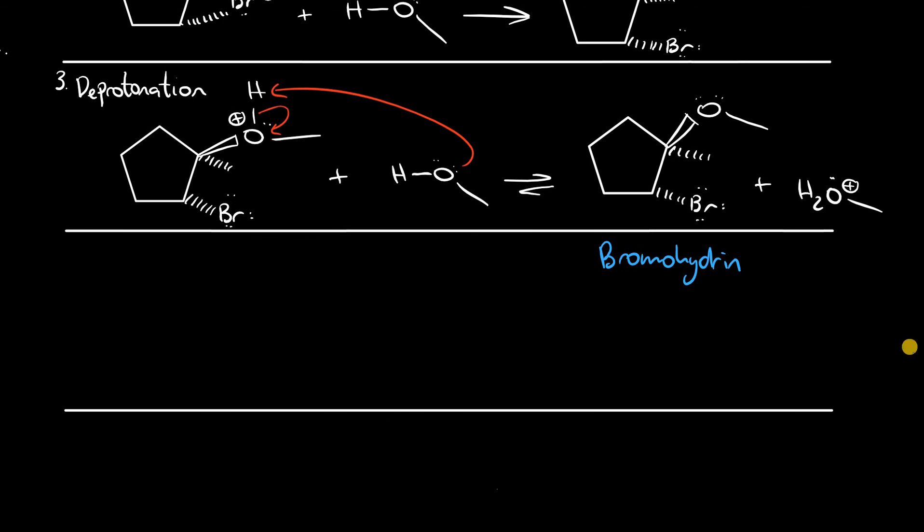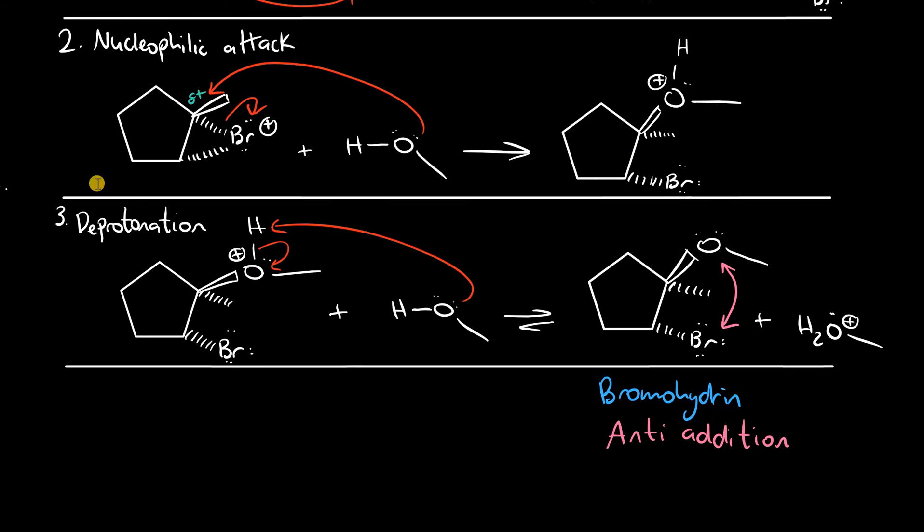Now just like with halogenation, bromohydrin formation is also an anti-addition. The only difference was the nucleophile, in this case methanol. And just like with halogenation, theoretically we can also form the enantiomer, which would look like this.